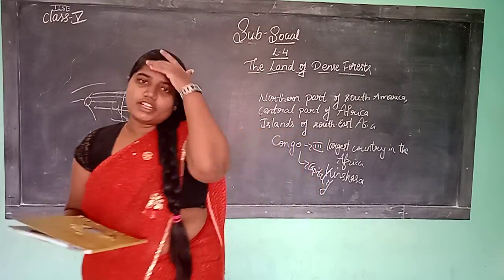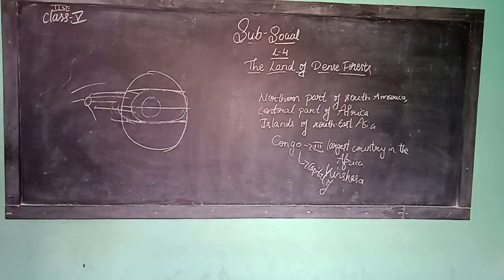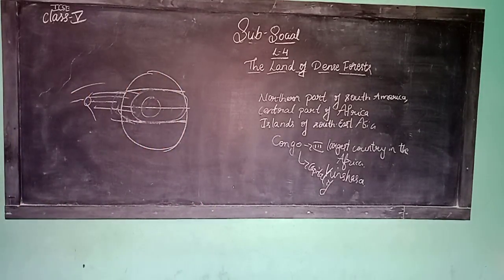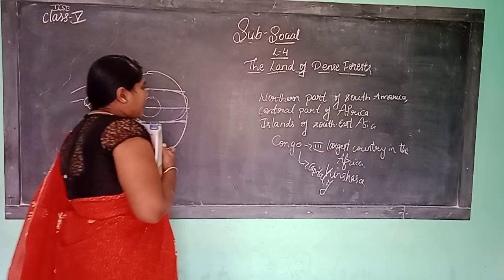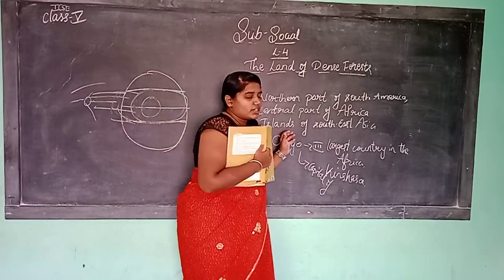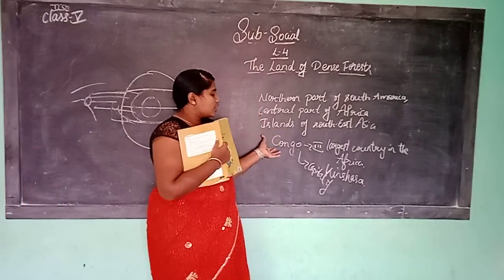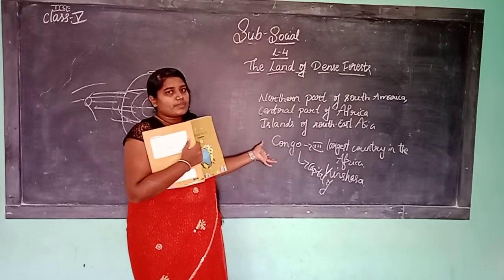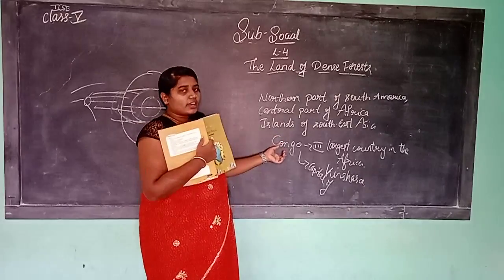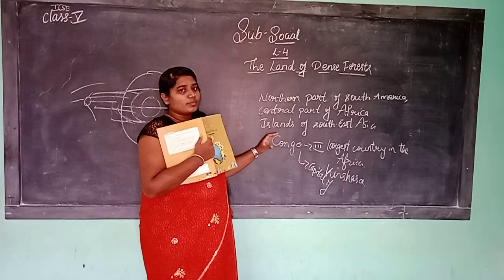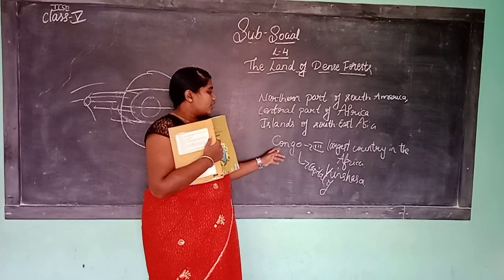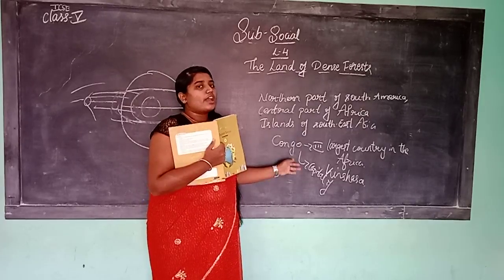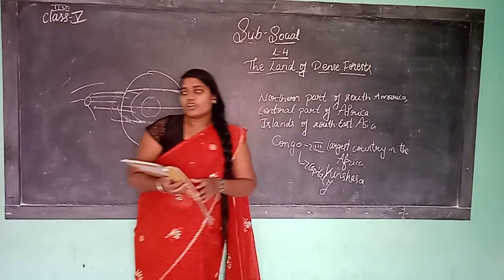With the climate in the Congo region generally, a major part of the country lies in the basin of the Congo River. The Congo River is also known as the Zaire River.